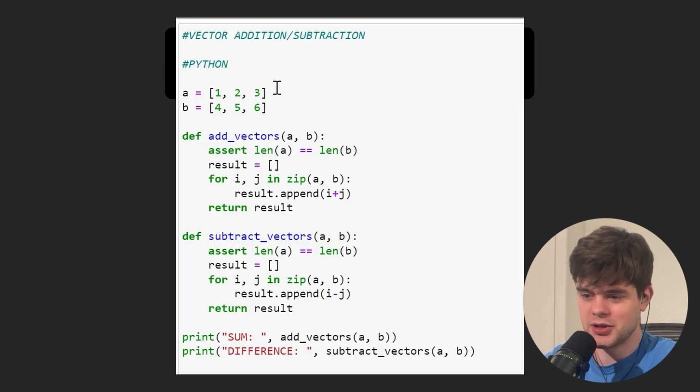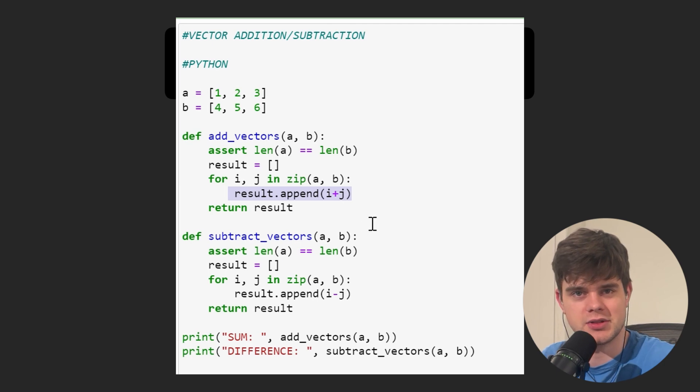This is an example in Python. We have two vectors defined as Python lists, and here are two functions, one for addition and one for subtraction. It simply iterates through both vectors, sums or subtracts one element from another, and stores the result in this result variable.